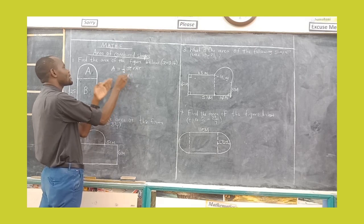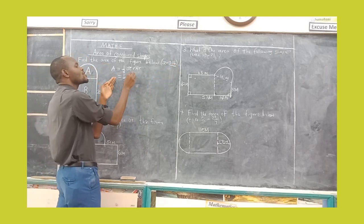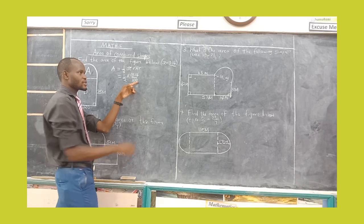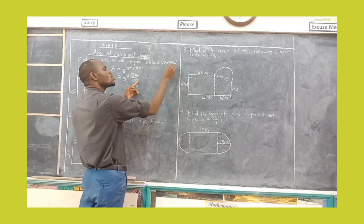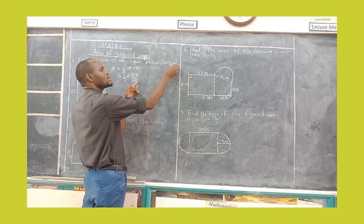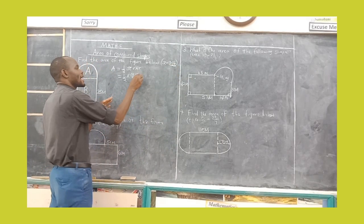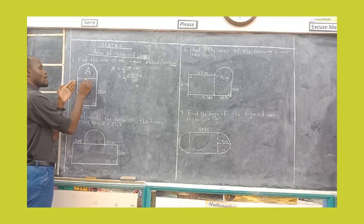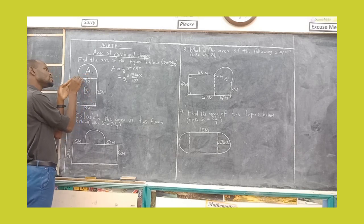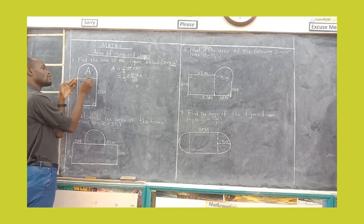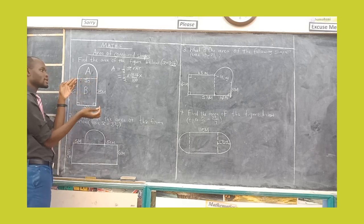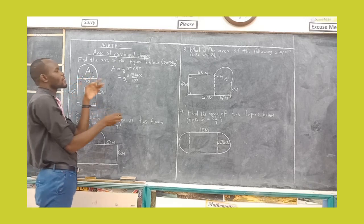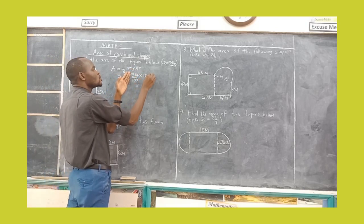So you have half times pi. You are supposed to use 314 over 100. Why are we having two zeros? Because we have two digits after the decimal point. The radius — what is the radius? If here we have 20, here we also have 20. This is the diameter because it is the line from one end of the circumference to the other going through the center. So the radius is 10 — we just divide the diameter by 2. So you multiply by 10 times 10.